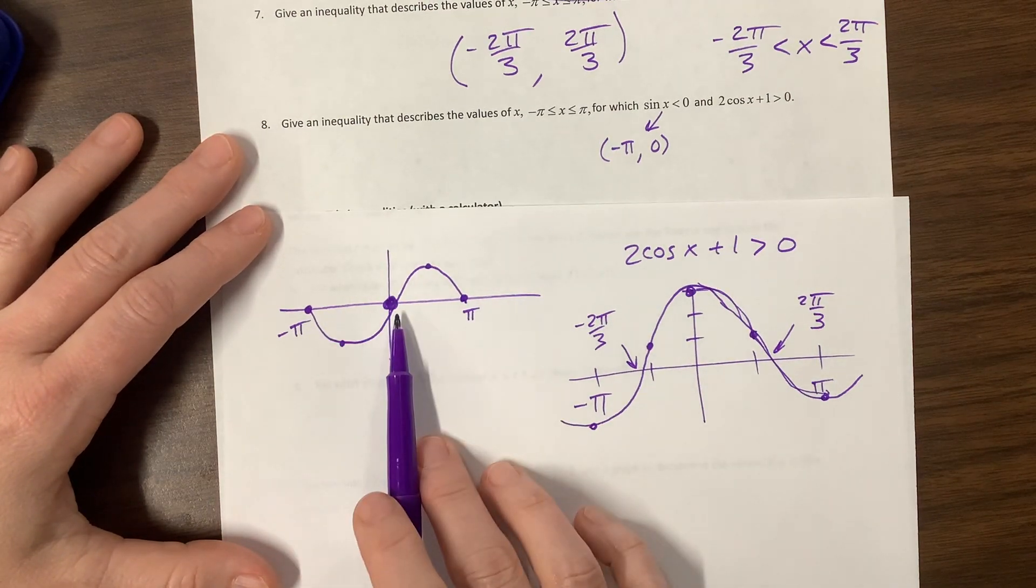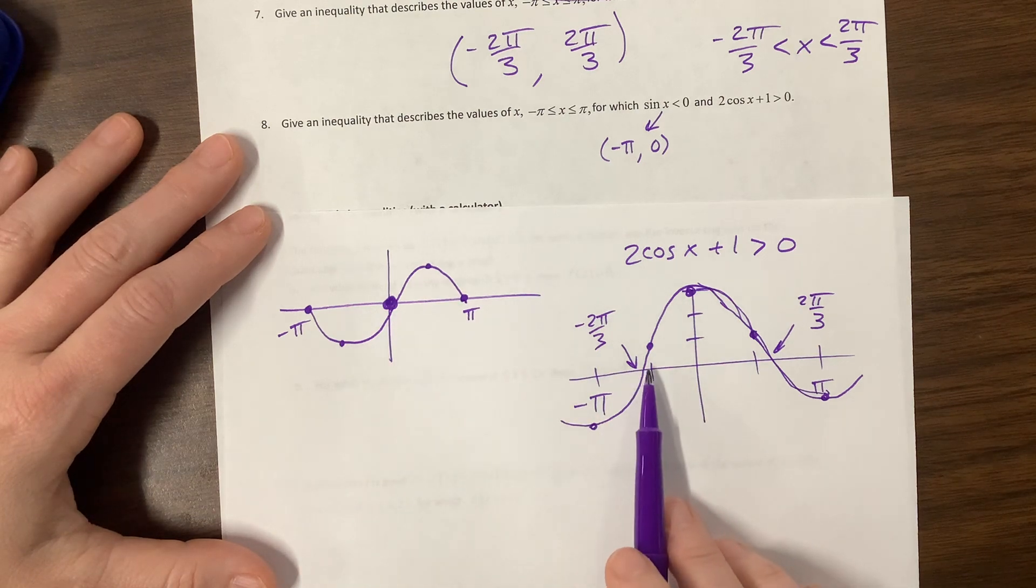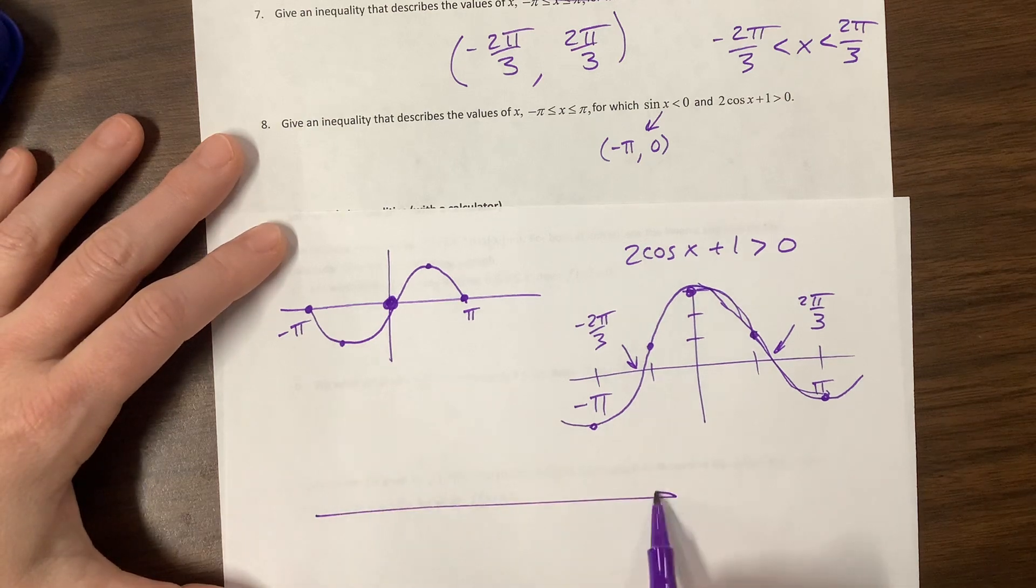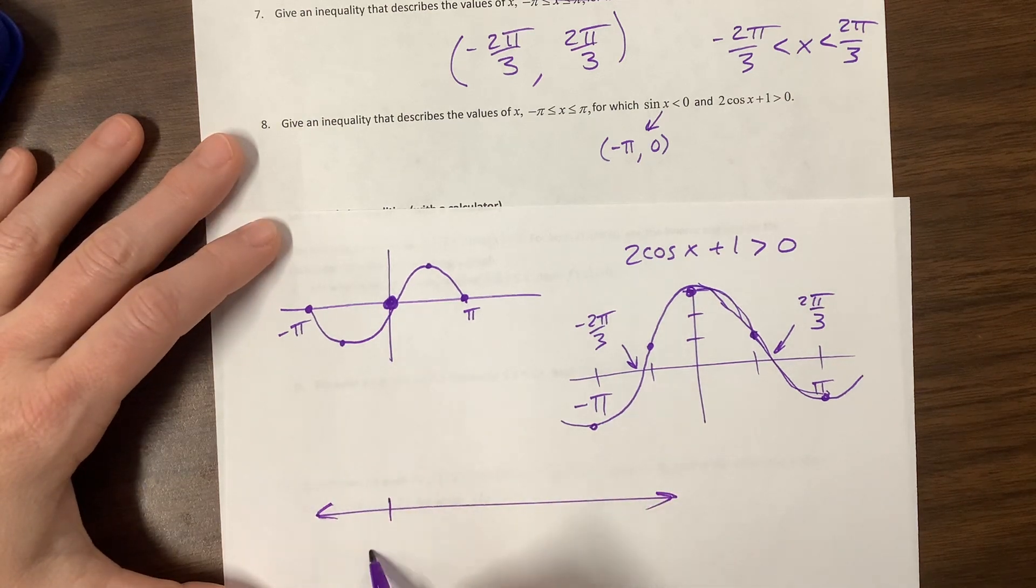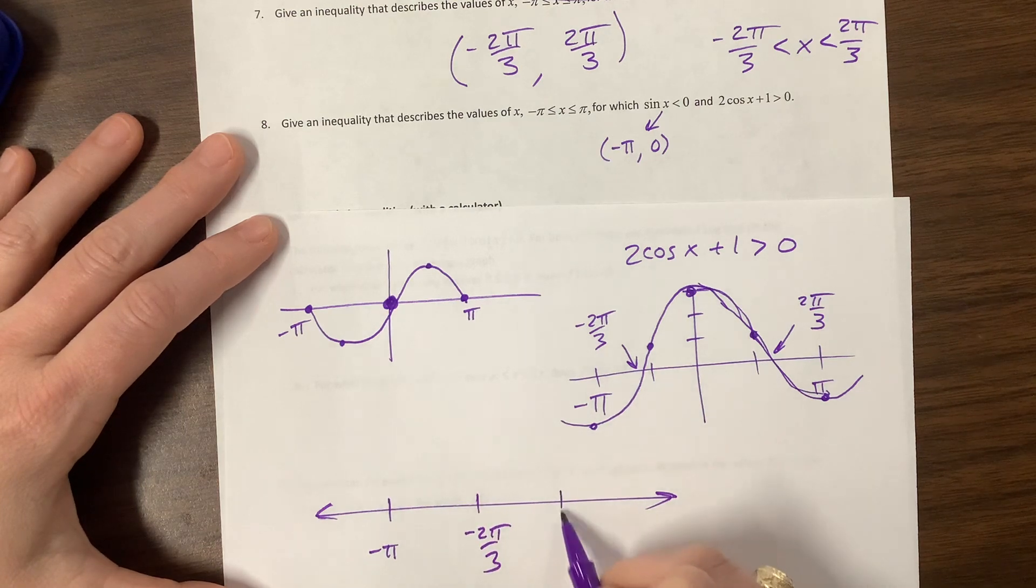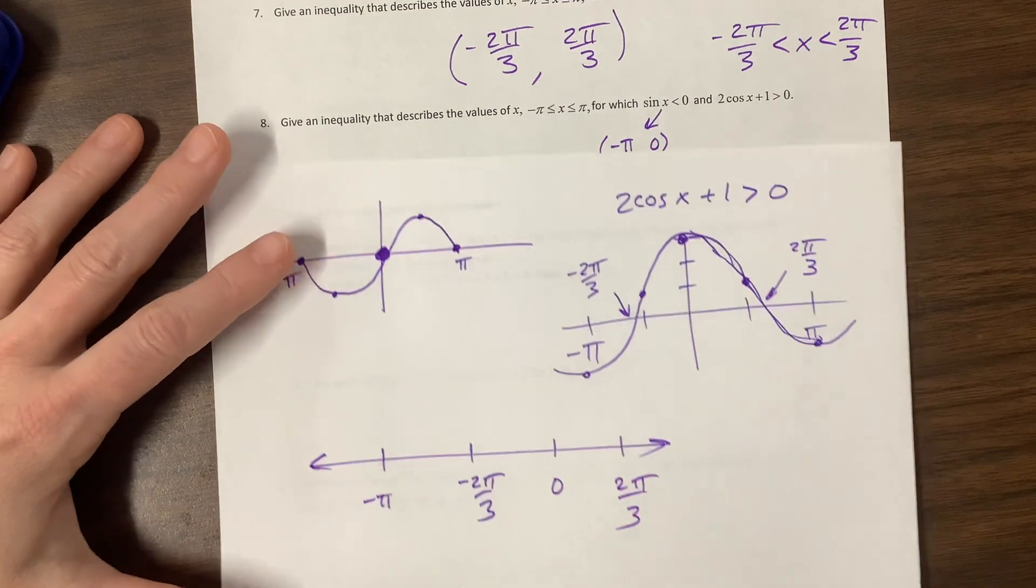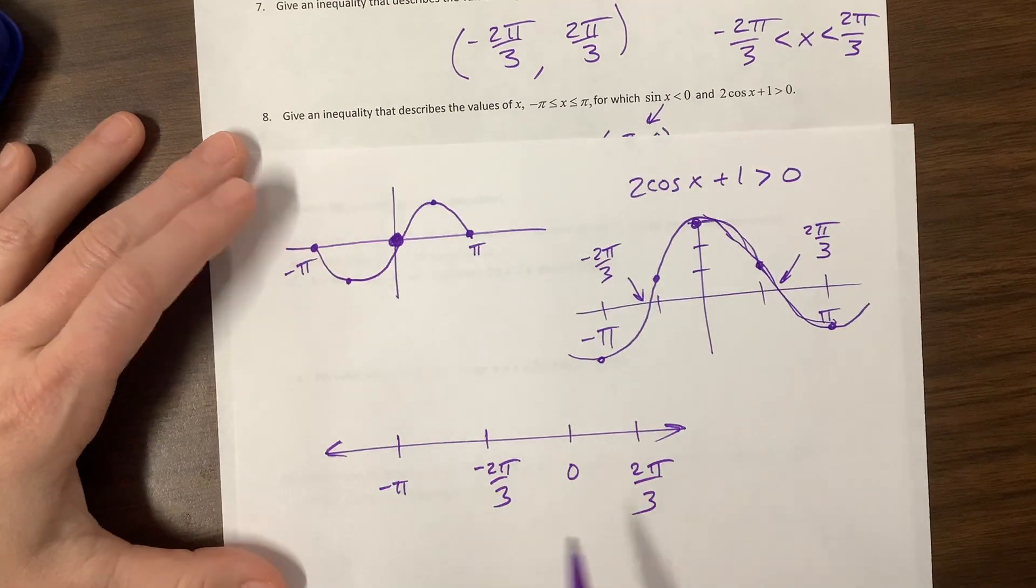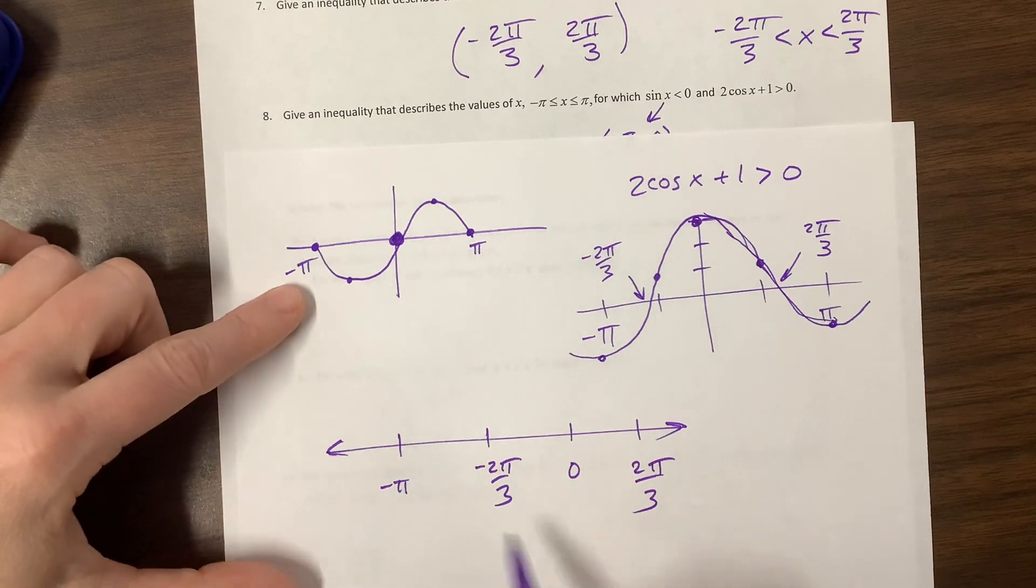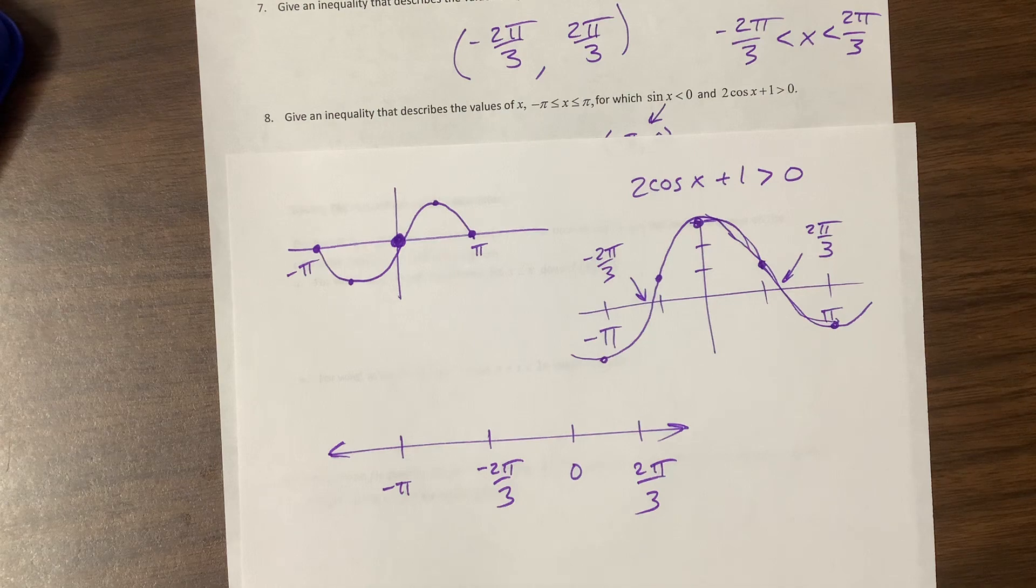But to answer this other question, it was between negative pi and 0. So for both of them to be true, we can't use anything between, if you thought of, here's negative pi, here's negative 2 pi over 3, here's 0, and here's 2 pi over 3. Not drawn to scale. We need the statement to be true.